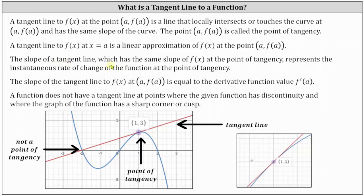The slope of a tangent line, which has the same slope of f of x at the point of tangency, represents the instantaneous rate of change of the function at the point of tangency. And this is because a slope is a rate of change. The slope of the tangent line to f of x at a comma f of a is equal to the derivative function value f prime of a.